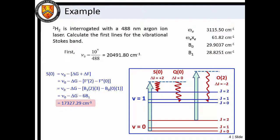As expected, we find that the vibrational Stokes S0 line has a lower wave number than the Q0 line, which is again lower in wave number than the O2 line. I hope that you found this short video on vibrational Raman spectroscopy useful. See you next time.